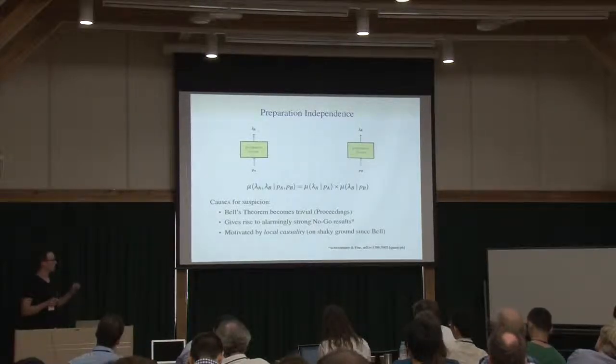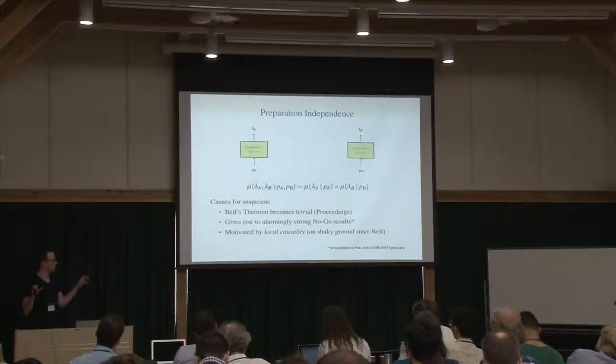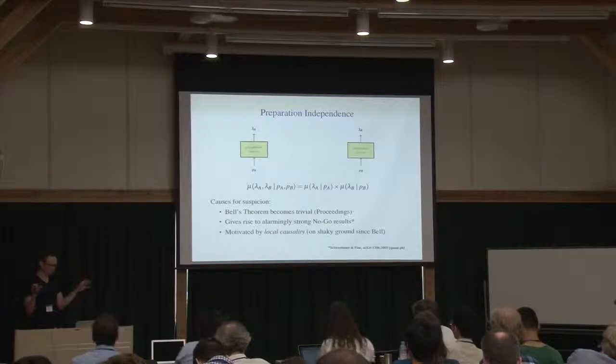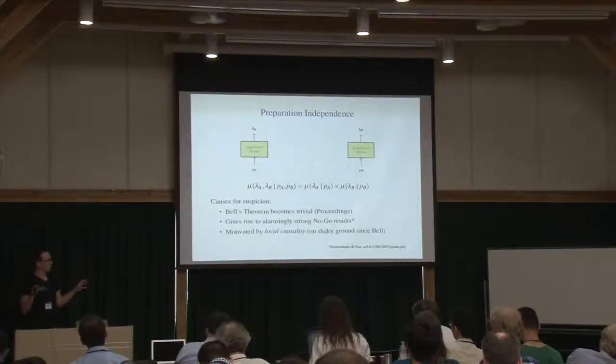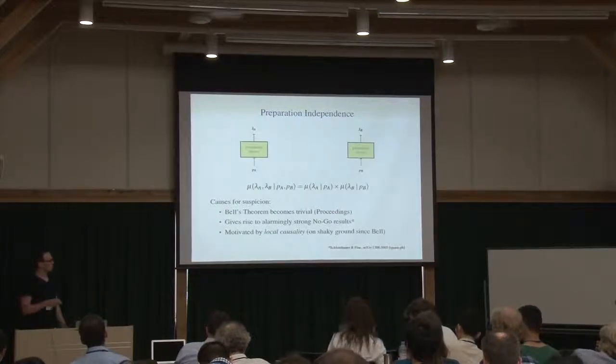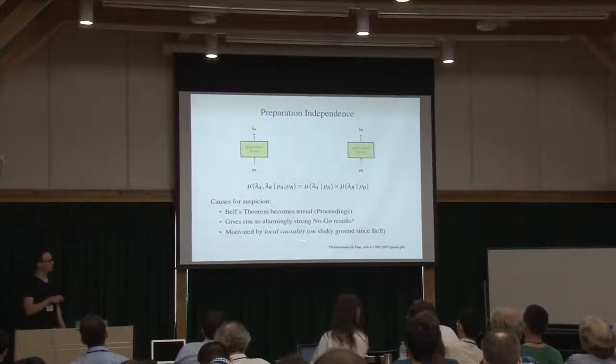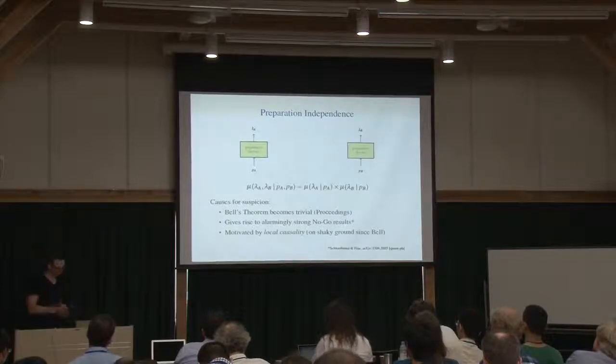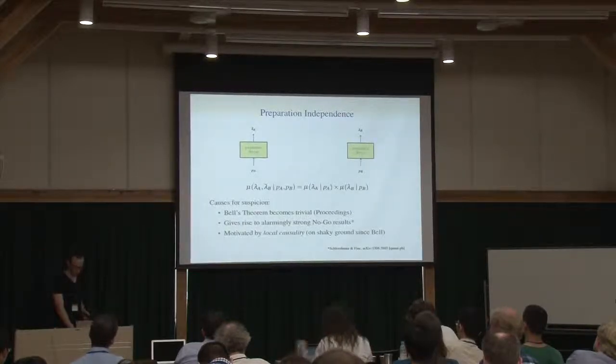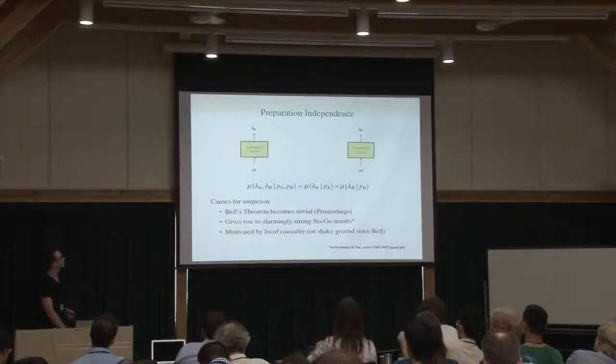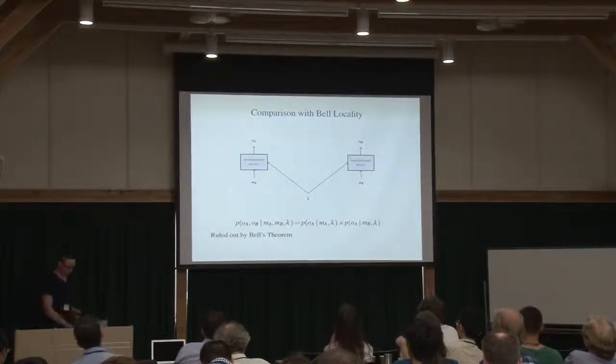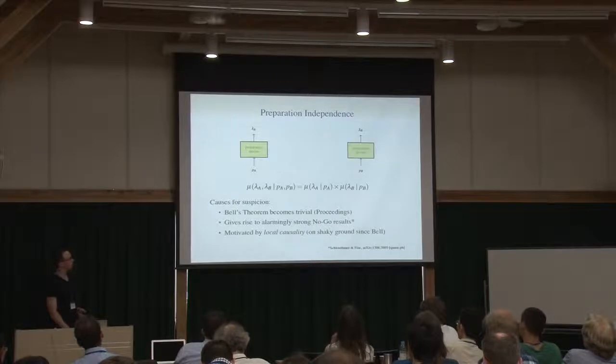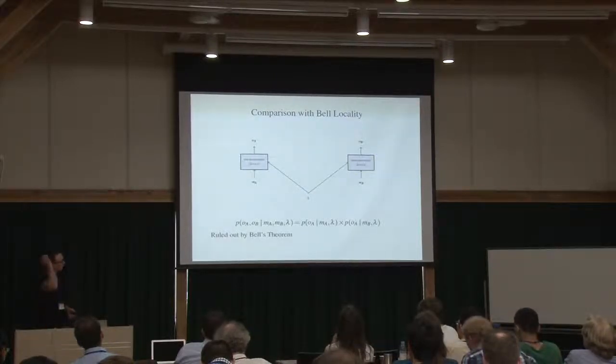A third point is that this idea of independence is motivated by local causality. So the idea that things that happen in different space-time regions, space-like separated regions, should have no causal influence on each other. But in fact, this idea of causality is on very shaky grounds.